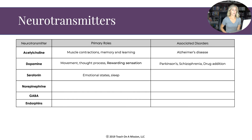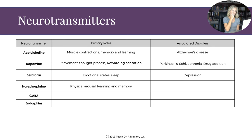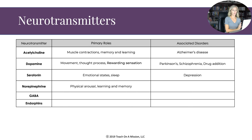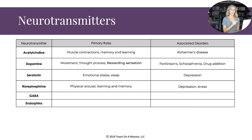Serotonin's primary role is emotional states and sleep. Too little serotonin is associated with clinical depression. Norepinephrine is involved in physical arousal — it is the technical term for adrenaline, though adrenaline is actually a hormone, not a neurotransmitter. Norepinephrine is also linked with learning and memory, and too little is associated with clinical depression and stress.